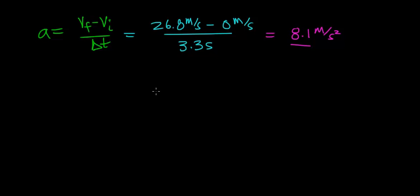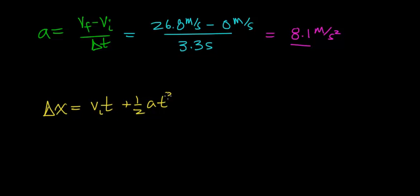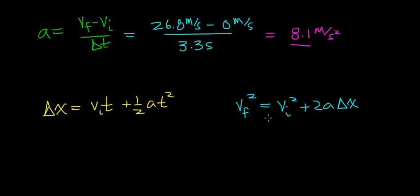There are two different ways we can find the distance the car travels while accelerating. We can use the kinematic equation: distance = initial velocity × time + one-half × acceleration × time². Or we can use: final velocity squared = initial velocity squared + 2 × acceleration × distance. In this video, I'm going to use both equations to show that they yield the exact same result.